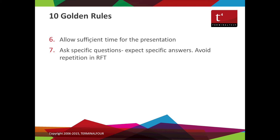The seventh: ask specific questions and get specific answers in the RFP, and avoid repetition — hopefully our sample RFP is helpful. The eighth: use existing purchasing frameworks. Vendors should have a good idea of what frameworks you might be able to use. Even if your own purchasing team doesn't know, vendors might be able to share that information. For example, in England the G-Cloud arrangement — purchasing departments might not be fully aware of what's available. Have that conversation with vendors, because if it speeds up your evaluation, that's good for you overall.